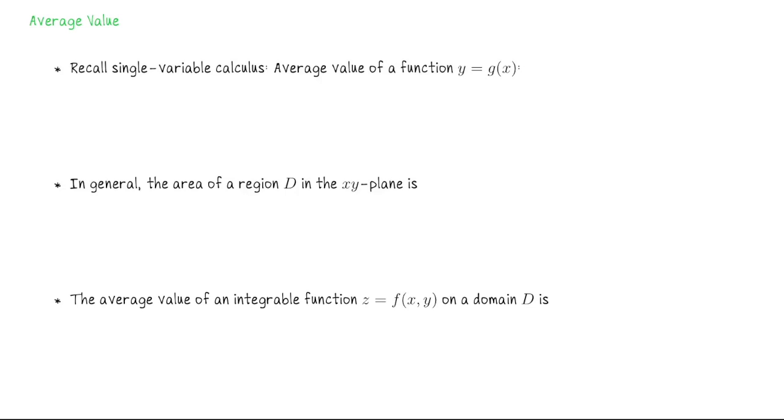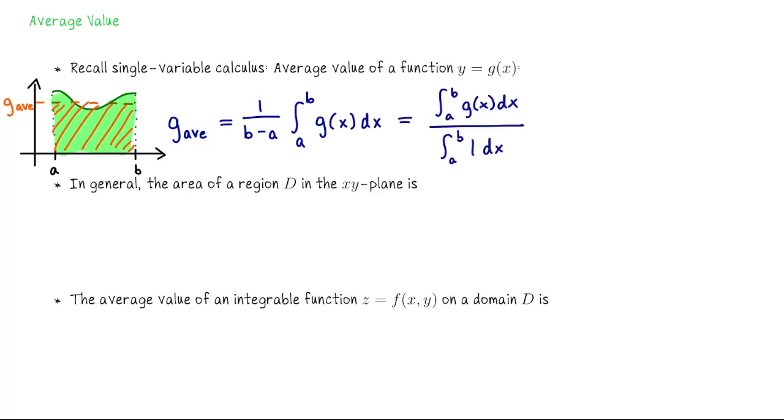You may recall from single variable calculus that integration gave us a way to compute the average value of a function over an interval. The overall average output from a to b is what we call the average value of that function over that interval. How we compute it is 1 divided by b minus a times the integral from a to b of g of x dx. I would like to reinterpret this as b minus a is the integral of 1 from a to b. So it's the integral of g divided by the integral of 1.